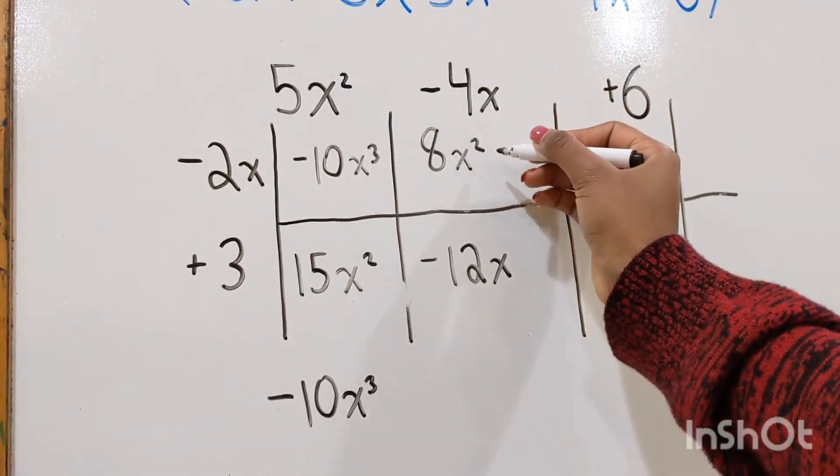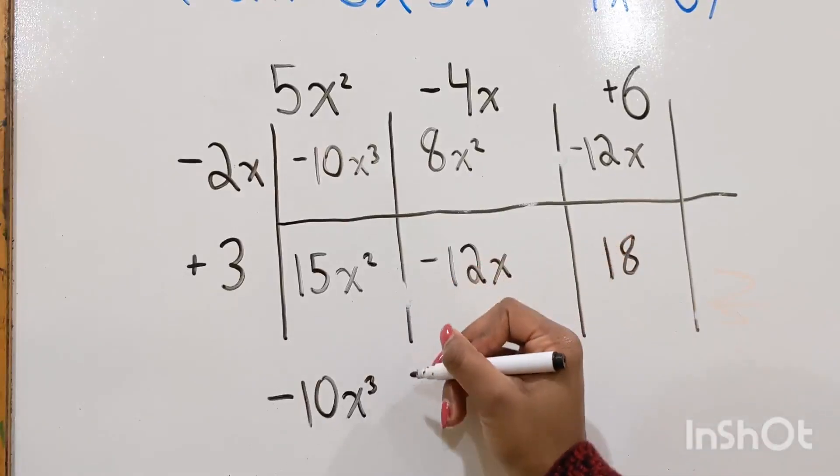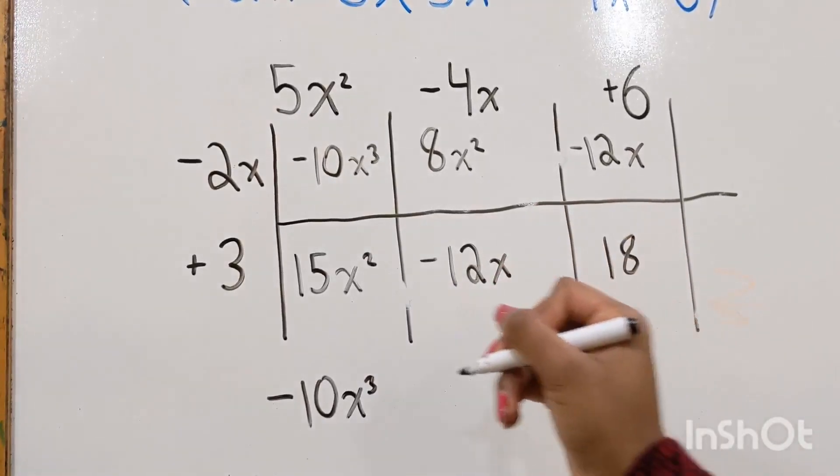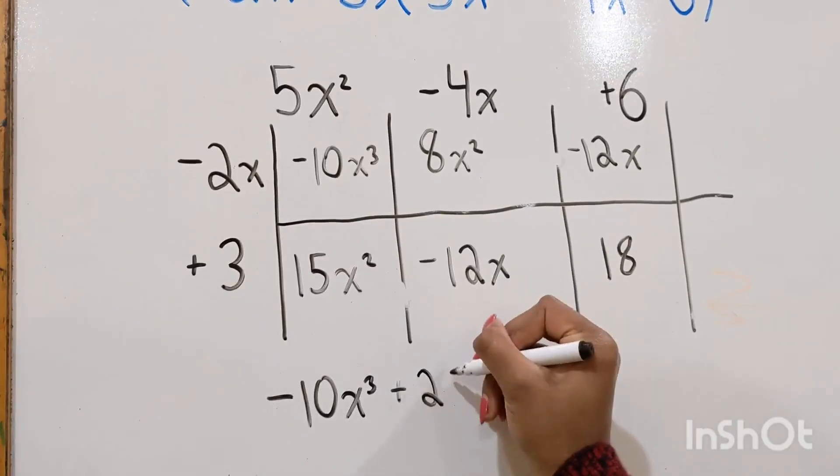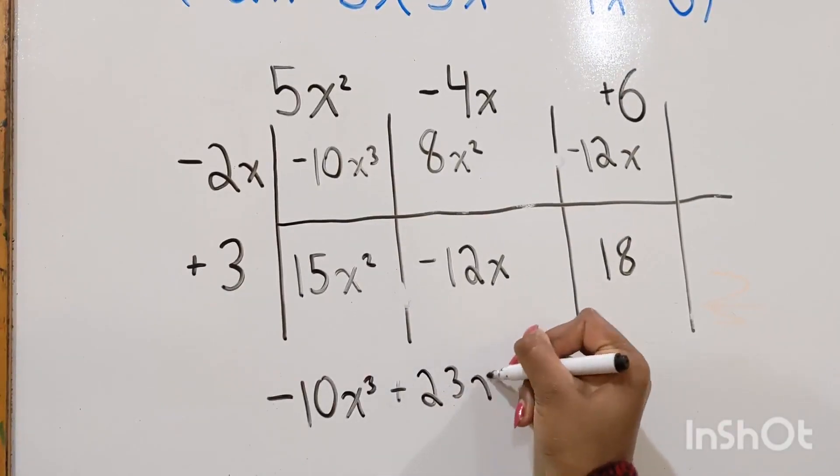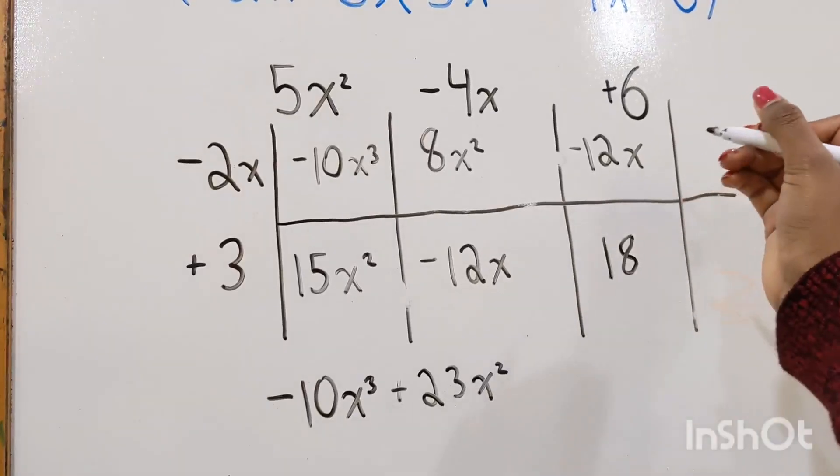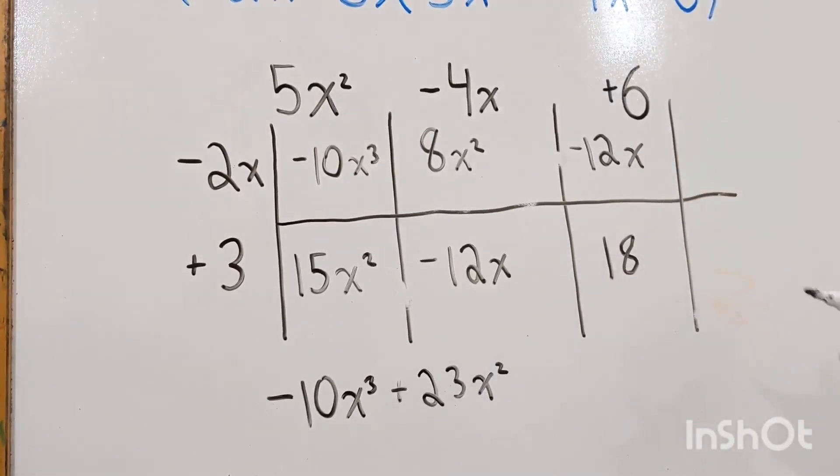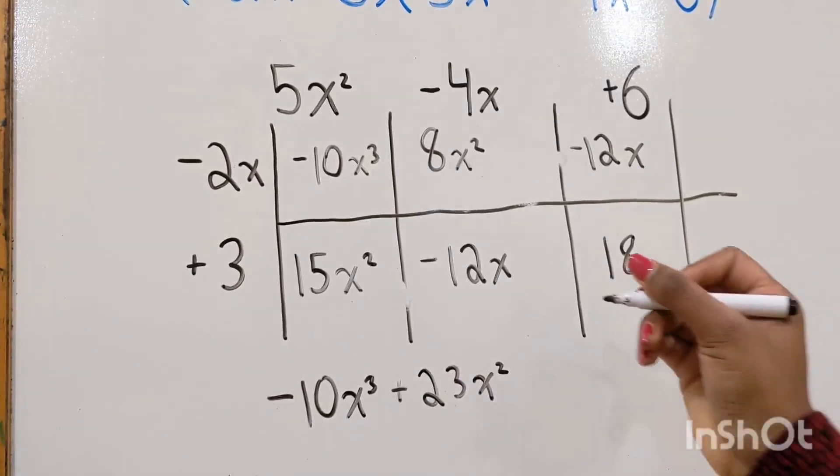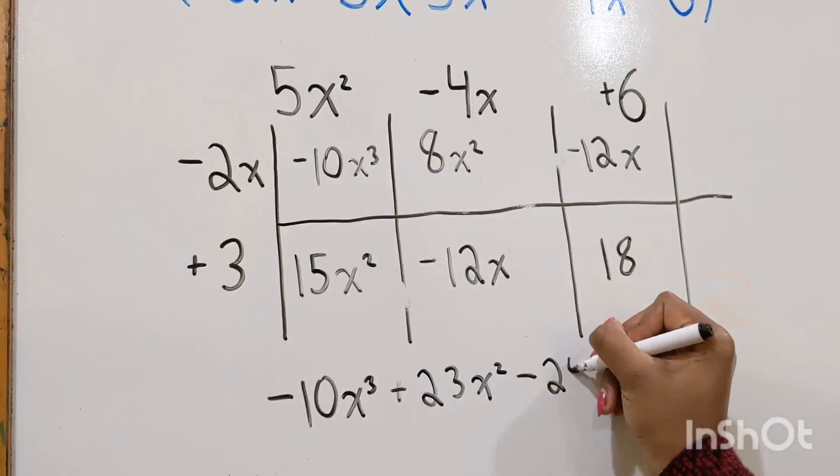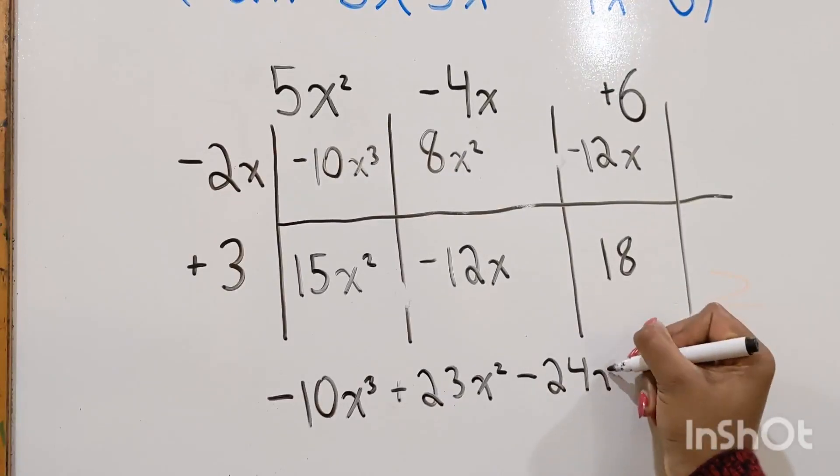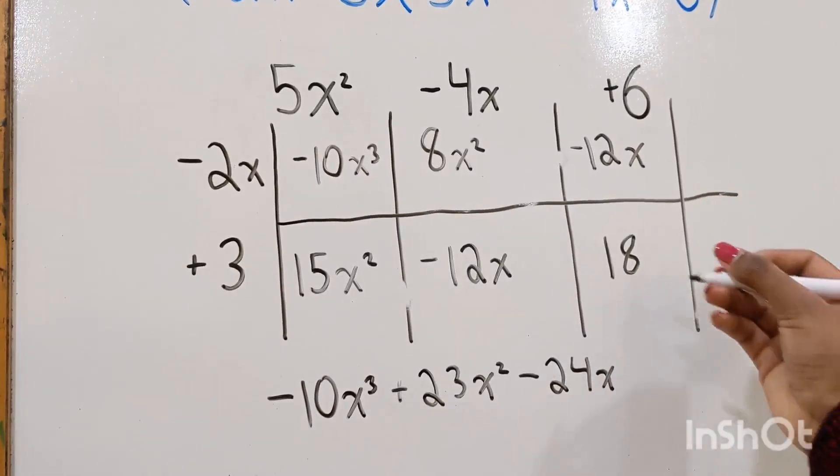8x squared plus 15x squared would be plus 23x squared. And then negative 12x plus negative 12x is negative 24x. Plus positive 18.